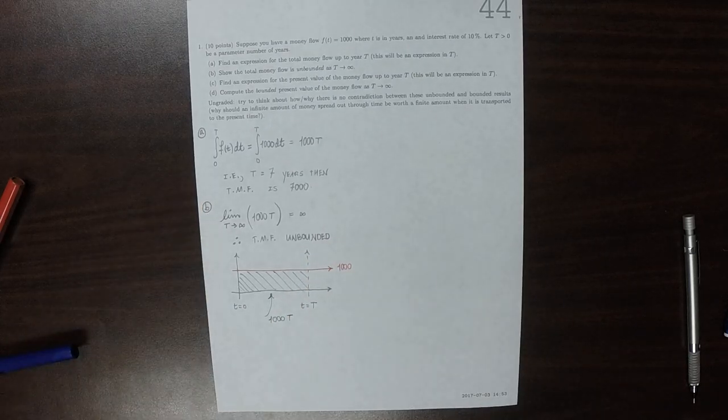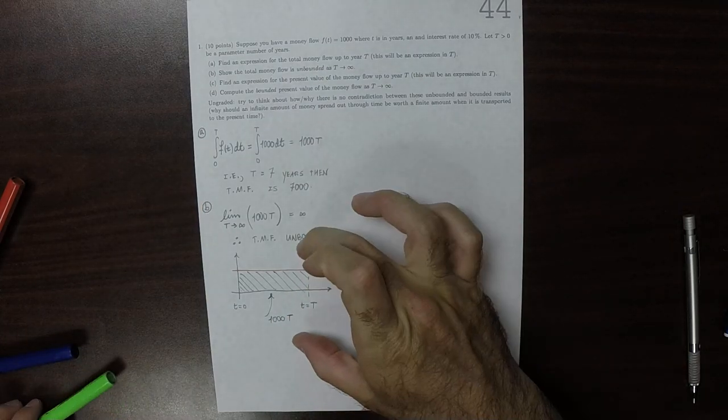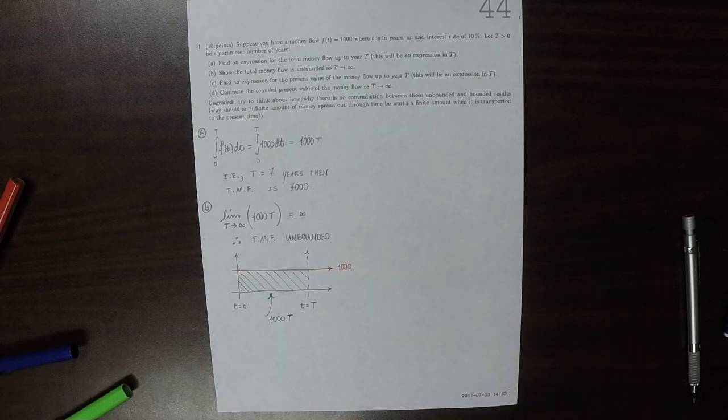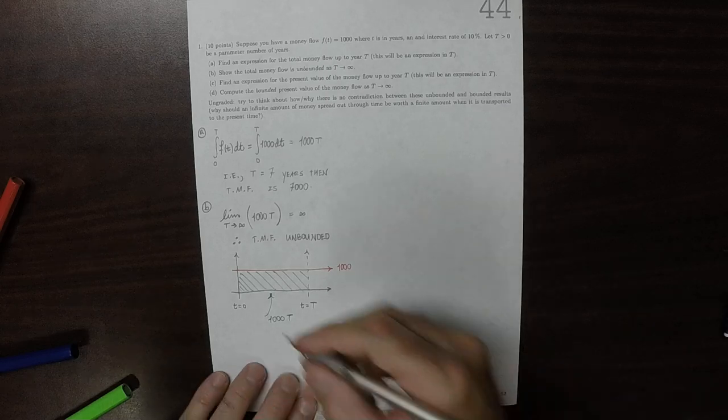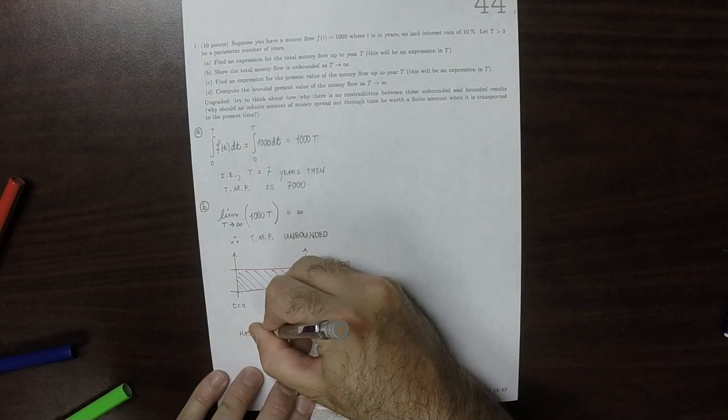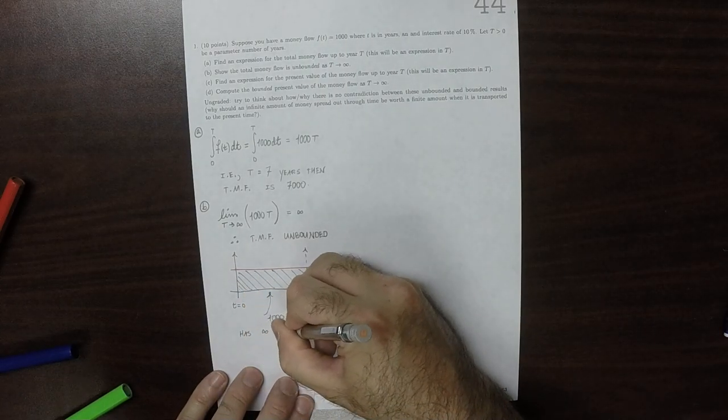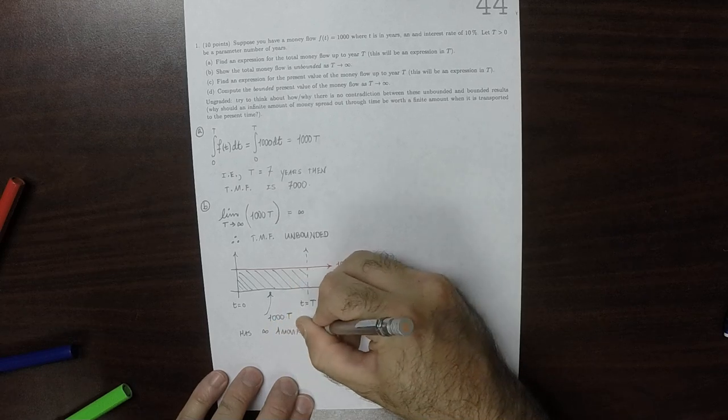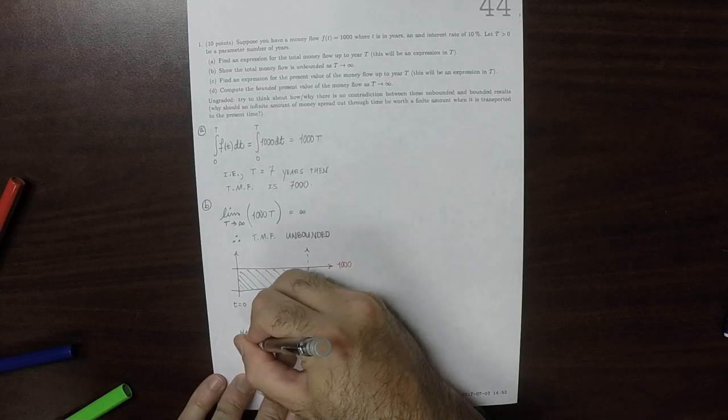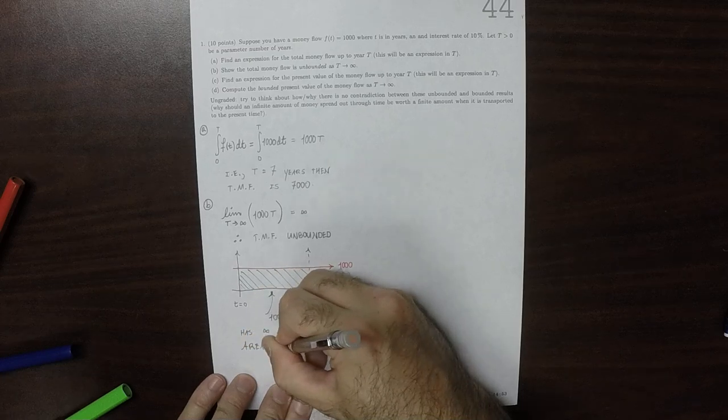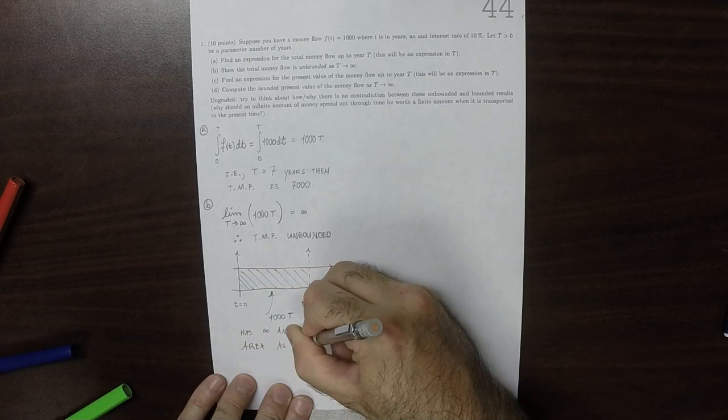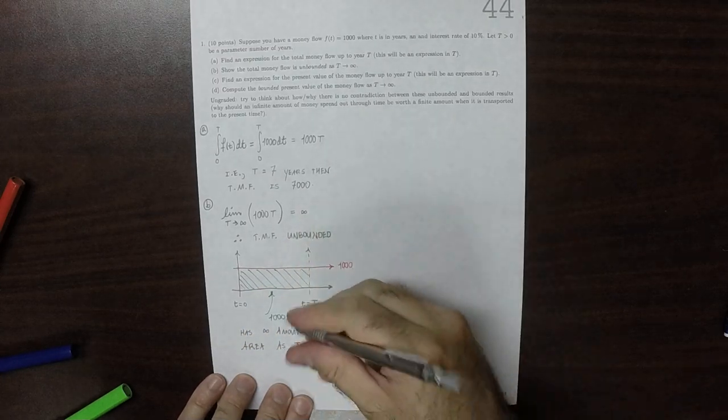And as you let big T go to infinity, that's an infinite amount of area. So this has an infinite amount of area. As big T, the location of that right fence post, goes to infinity.